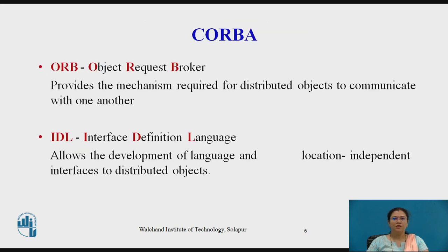Now we will see the importance of ORB and IDL in CORBA. ORB is an Object Request Broker. It provides the mechanism required for distributed objects to communicate with one another — it enables clients to invoke methods on a remote object. IDL means Interface Definition Language. It allows the development of language and location-independent interfaces to distributed objects. CORBA uses IDL to specify the interfaces which objects present to the outside world, and specifies a mapping from IDL to a specific implementation language like C++ or Java.